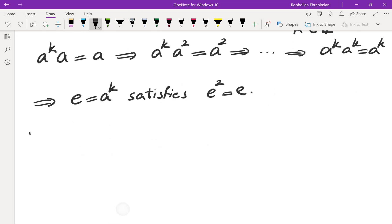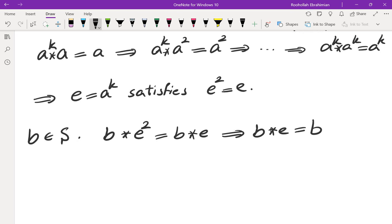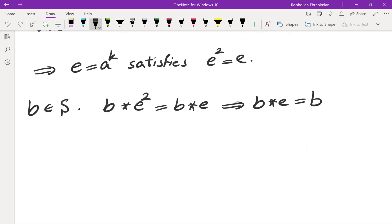So now let's take an element b. So let's say b is in S. Since e squared is equal to e, I can say that b star e squared, and sometimes I don't put this star, but I actually mean that these are just the operation, so if I don't put this star, it's just the same operation. This is the same as b star e. Now, by cancellation from the right, we can say b star e is equal to b. In fact, this e is an identity from the right for every single element b in S. It's not necessarily just for that element a.